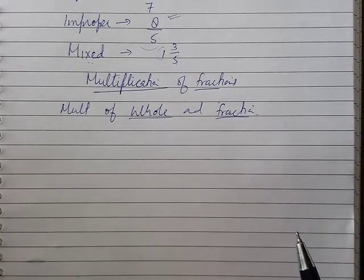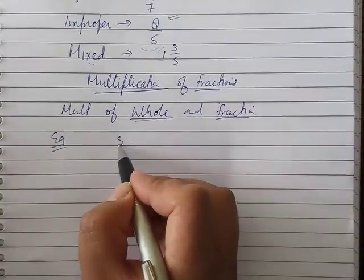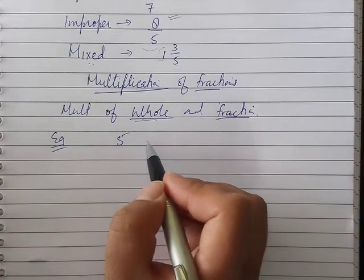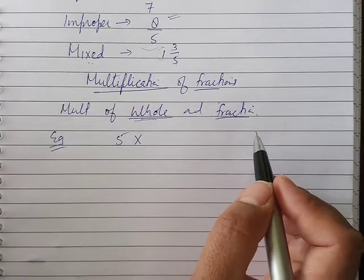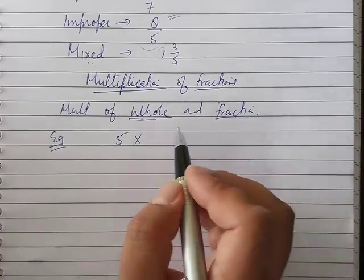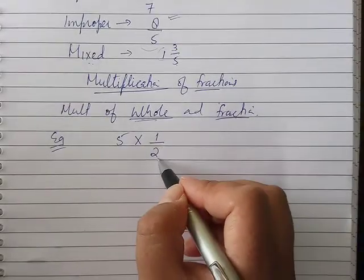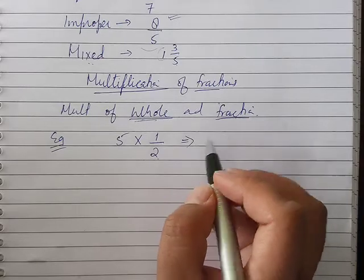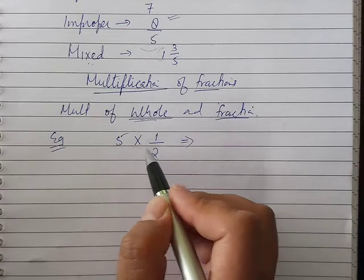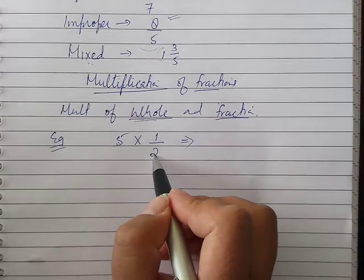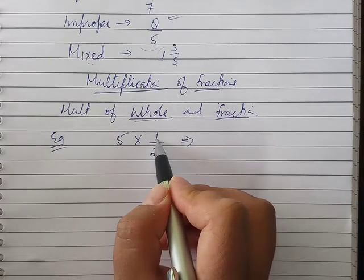When multiplying fractions by a whole number, take examples like 3 by 5, 1 by 2, and 5 by 4. The next step is to multiply — you multiply the numerator by the whole number and keep the denominator.